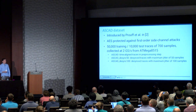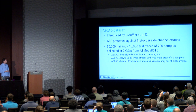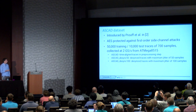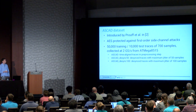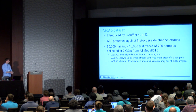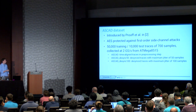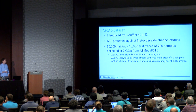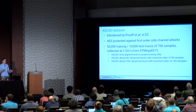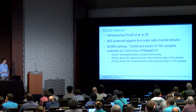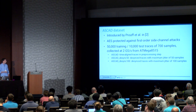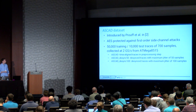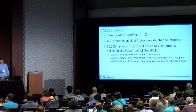The ASCAD dataset was introduced by Emanuel Prouff et al. It is an AES implementation protected against first-order side-channel attacks, consisting of 50,000 training traces and 10,000 test traces of each 700 samples, all located in the first round of AES. It features three variants: the normal ASCAD dataset with aligned traces, a desync variant where traces are desynchronized with a maximum jitter of 50 samples, and a desync-100 version with a maximum jitter of 100 samples.